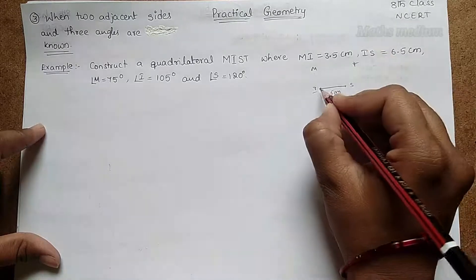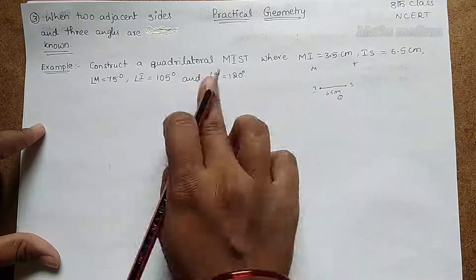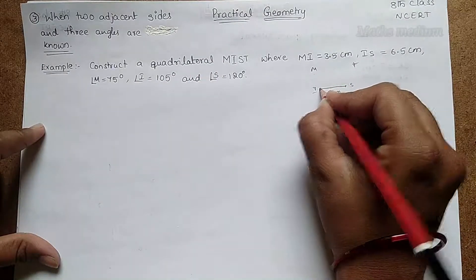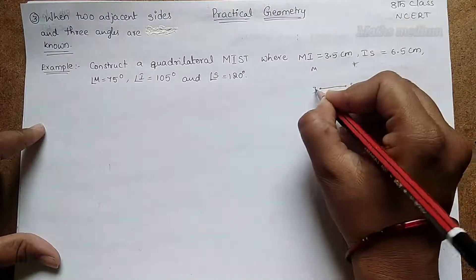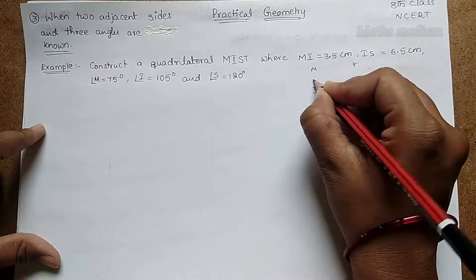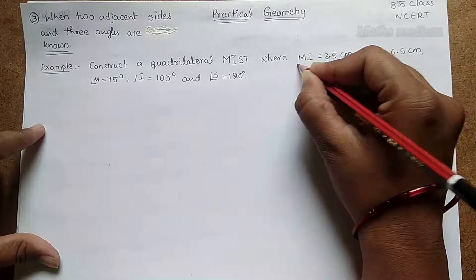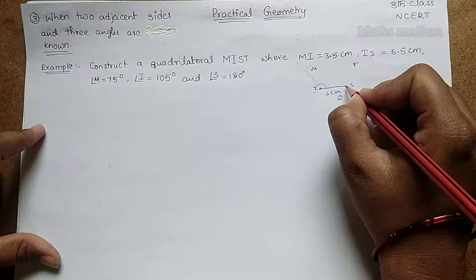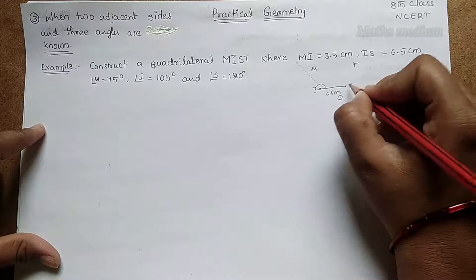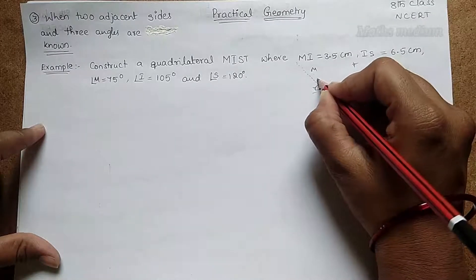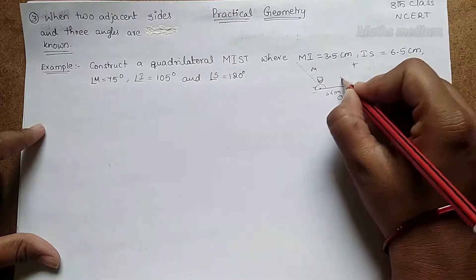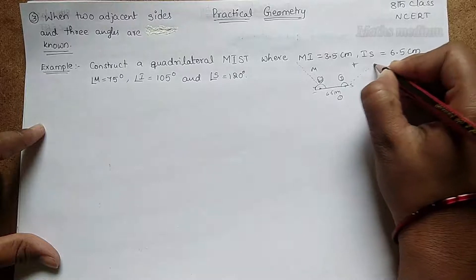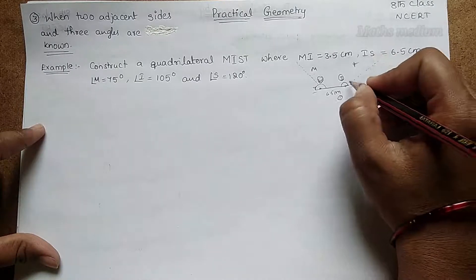At point I we have angle I equal to 105 degrees — take a protractor and make 105 degrees. This is Step 1. At point S we have 120 degrees — take the protractor and make another angle of 120 degrees. This is Step 2 and Step 3.